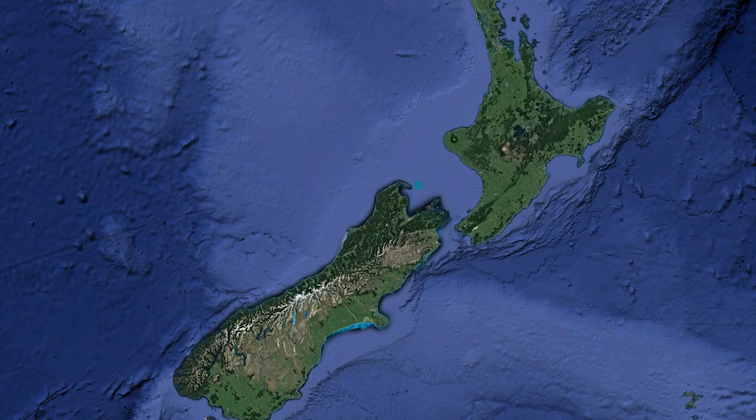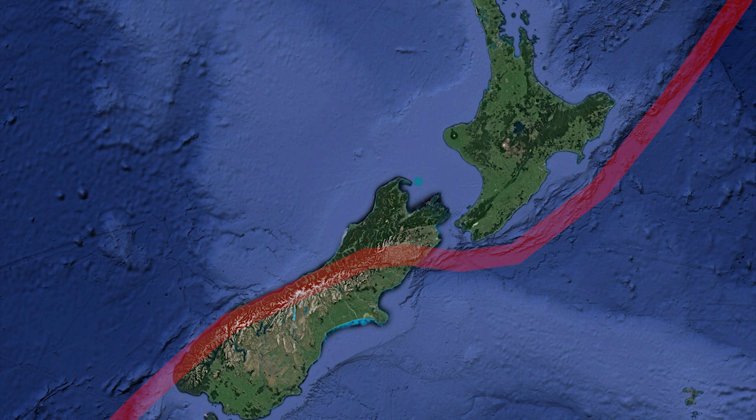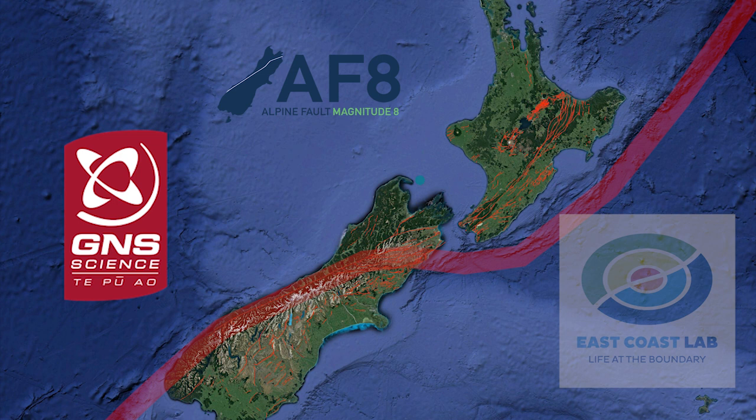New Zealand sits right across this plate boundary. It's a complicated boundary, different in different places. Earthquakes are not just produced along the plate boundary — the crust on either side is broken up by many faults, which is why we often get earthquakes on fault lines in other parts of the country at some distance from the plate boundary itself.